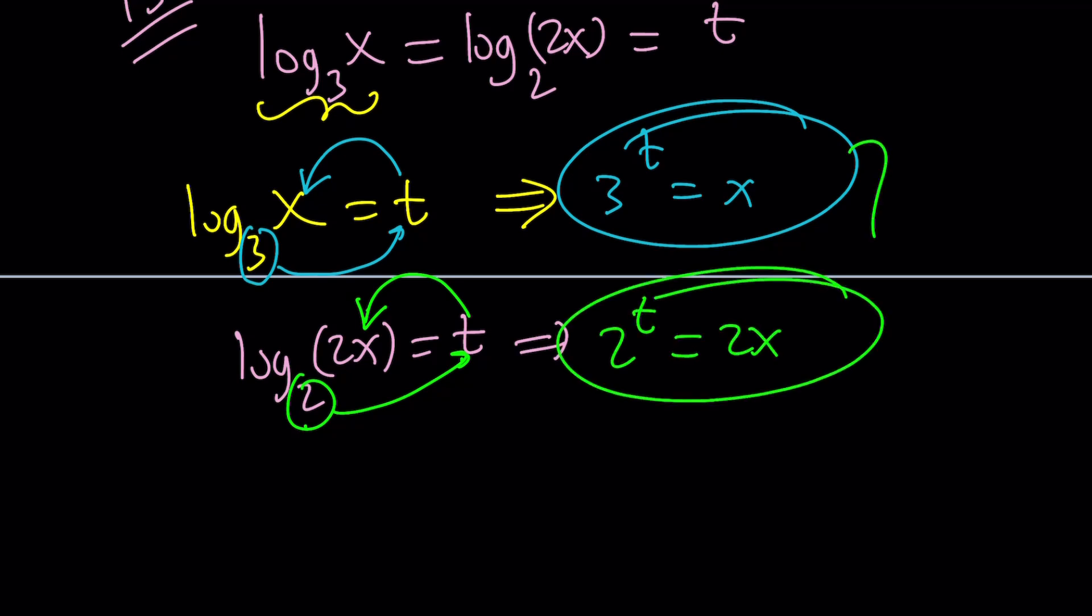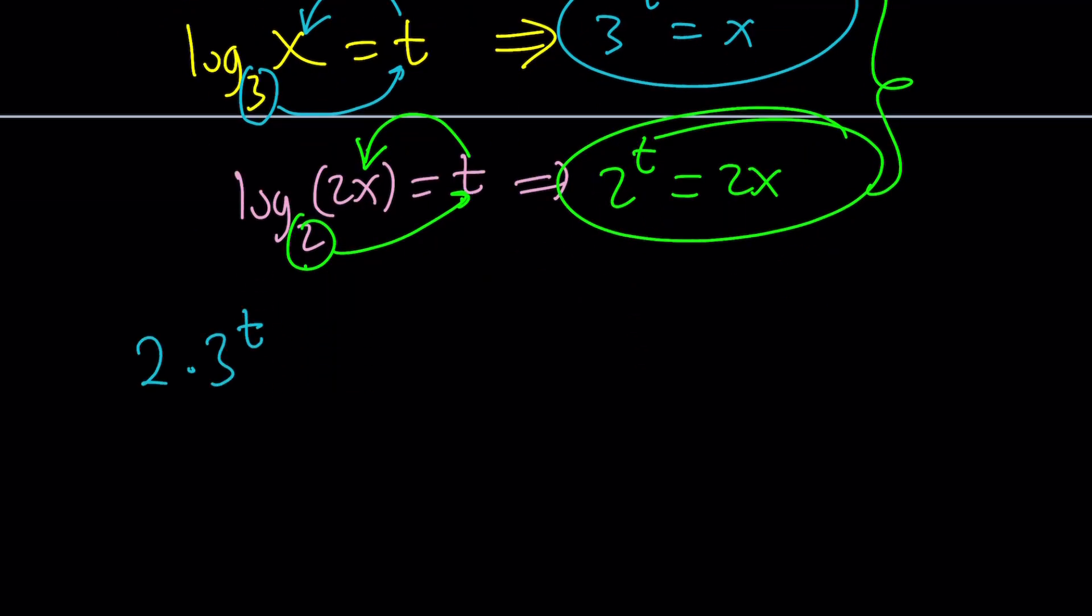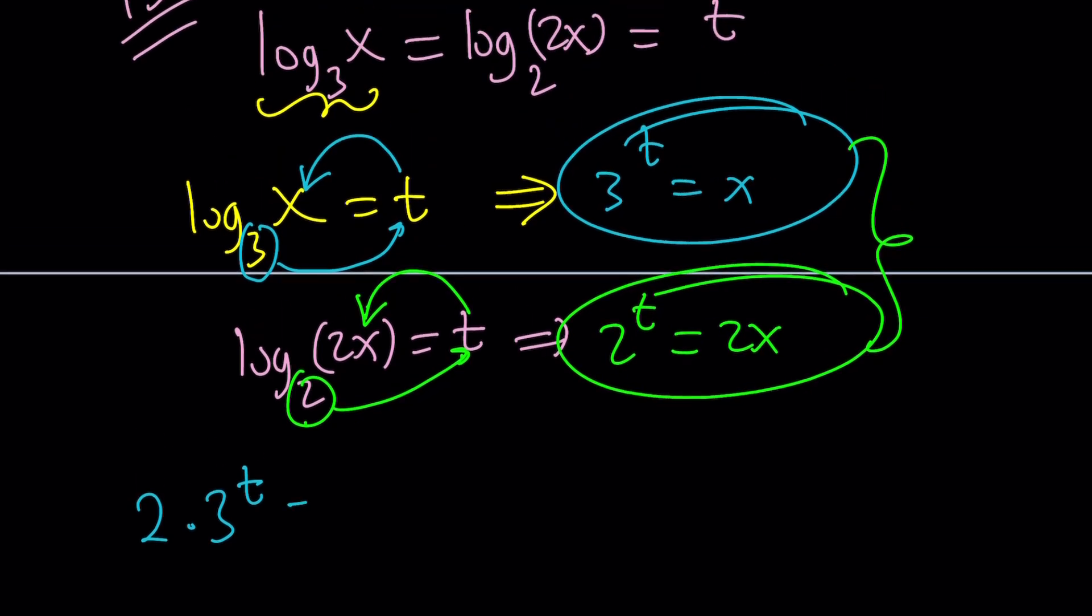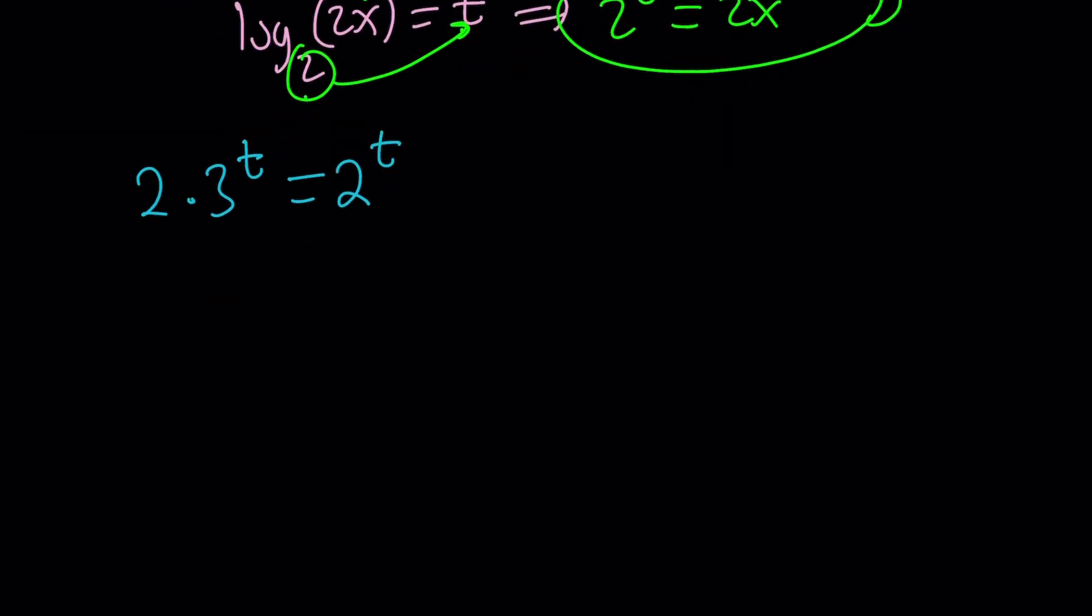How do I reconcile these equations? How do I solve it as a system? One of them is x, the other one is 2x. So double the first equation: 2 times 3^t is equal to 2x, which is equal to 2 to the power t. We got rid of x because we need to solve for t. To solve for t, this is an exponential equation. Remember, I told you we were going to use substitution, and from there we're going to get an exponential.